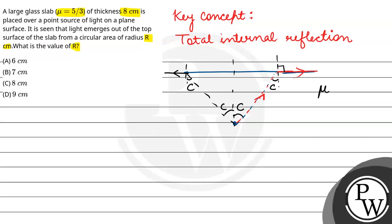Now mu is given, mu is equal to 5 by 3 given in the question. And we have said that this is a circular area with radius r. This is a circular area, this is radius r. And the thickness is 8 cm. So the thickness is 8 cm.